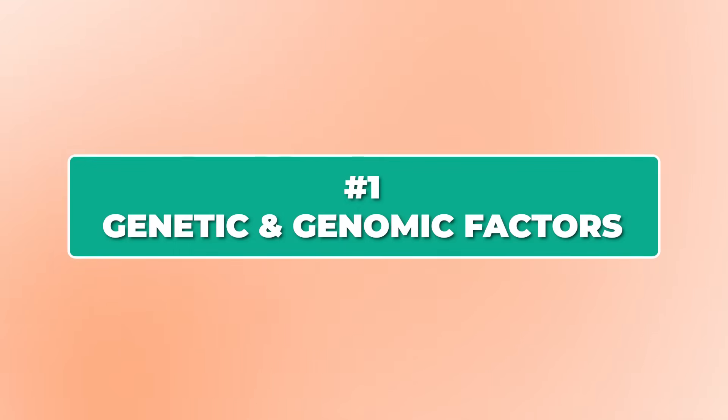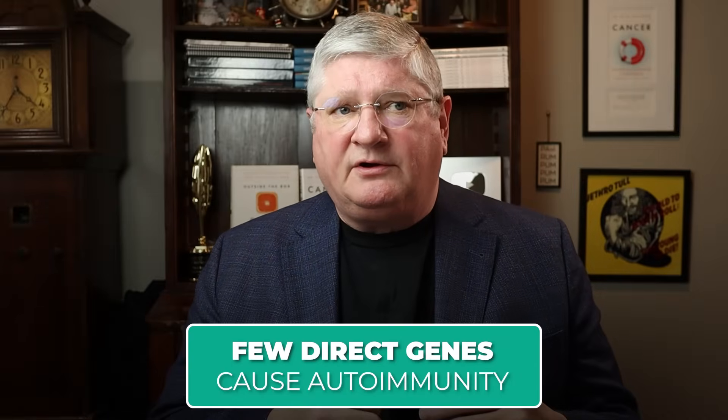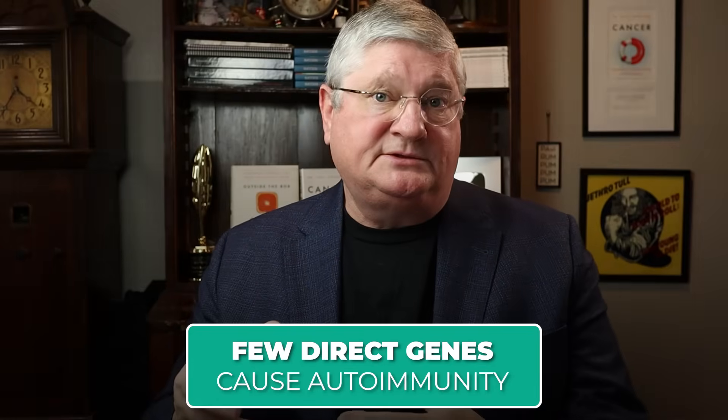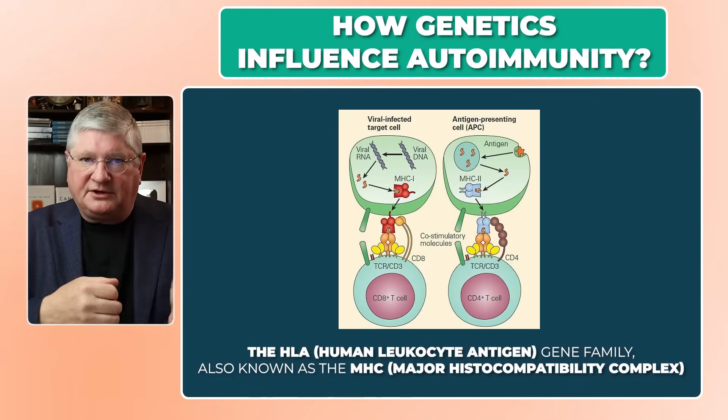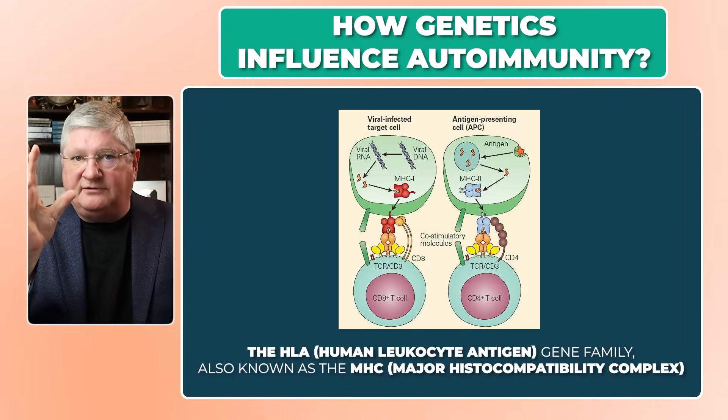Number one — and these don't go in any particular order, but we had to number them because there are three — would be anything related to genetic or genomic factors. There are very few direct autoimmune genes in humans, so when we think of genetic factors, we have to think of two layers of genetic issues. One would be the more direct family of genes that may lead to the onset of autoimmunity, and that would be the HLA major histocompatibility complex gene family.